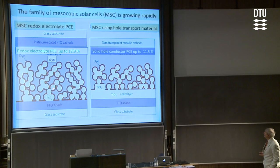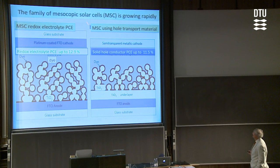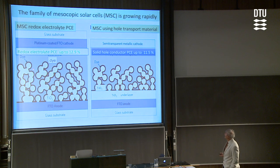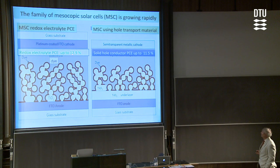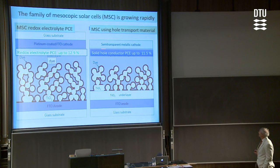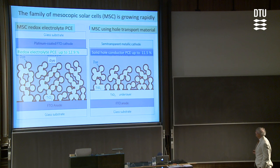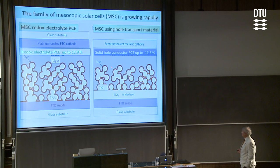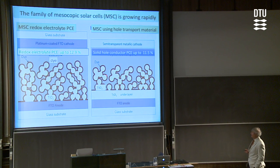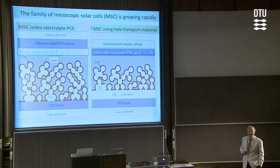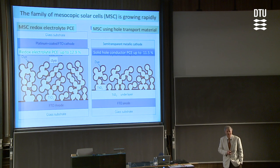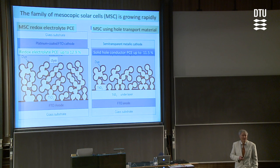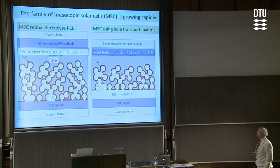There are several embodiments now — a whole family growing rapidly. The classical one I explained has a current top efficiency close to 13%. The solid-hole conductor cells are catching up. These are materials where the positive charge is transported by hopping — no more liquid. It's an organic or inorganic solid, a P-type conductor that moves the hole to the back contact.